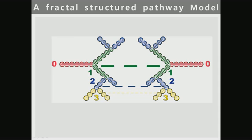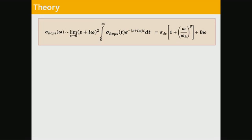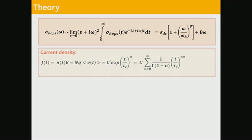Here you see a schematic diagram of ionic transport through the object with a fractal-structured pathway. The number indicates the branch of the pathways in a cluster. The frequency-dependent power law is obtained by the Fourier transformation of the time-dependent hopping conductivity, expressed as the current density.